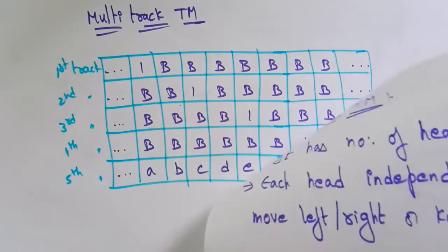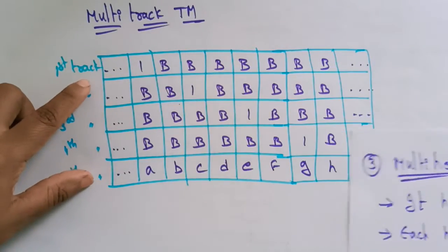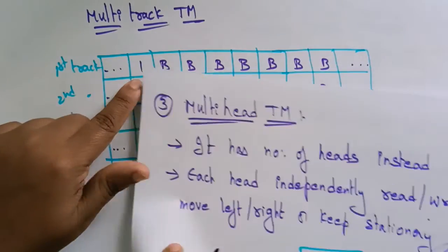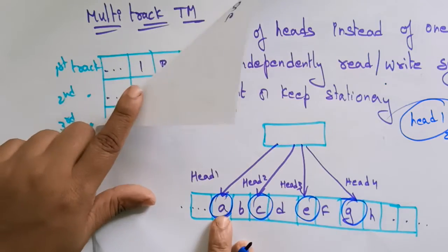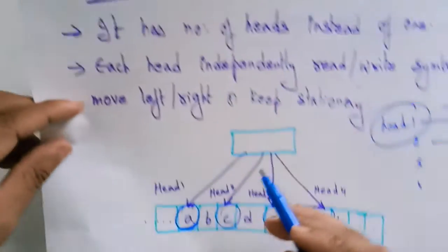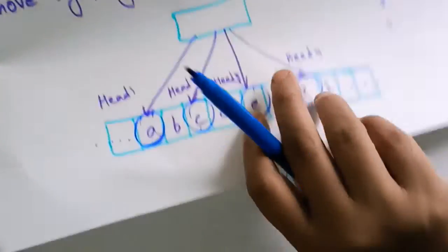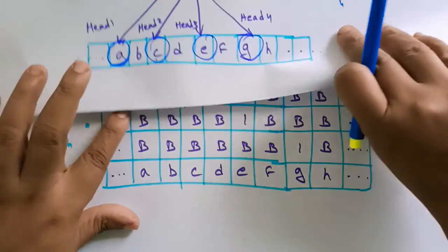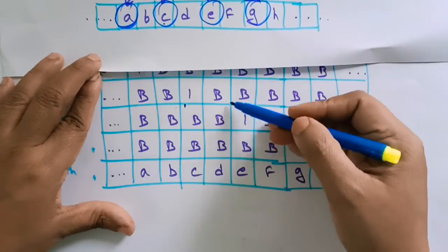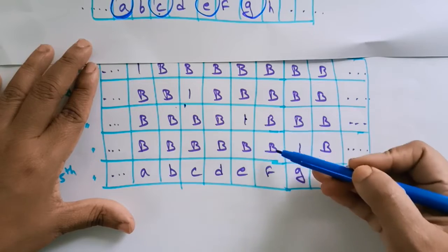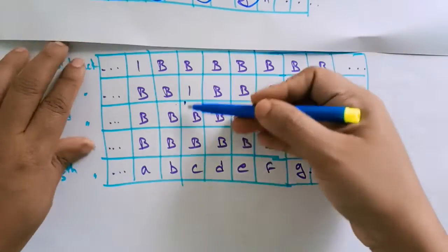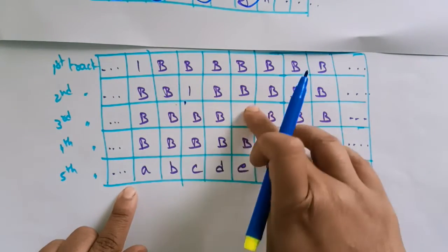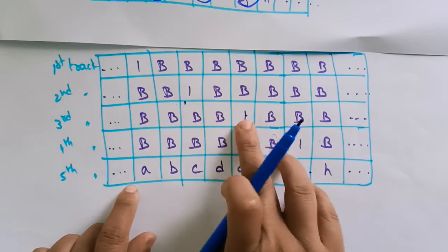So this multi-head Turing machine is placed on a track, each having cells. Suppose head A is pointing towards head 1 and the remaining are all blank spaces. Next, C is pointing towards the second head, so the second track consists of C. D is not pointing here — just leave one blank space — and E is pointing, then leave one space and G is pointing. So everything is a track: A, B, C, D, E, F, G — whatever track is pointing towards the letter marks a 1. This is the multi-track Turing machine.